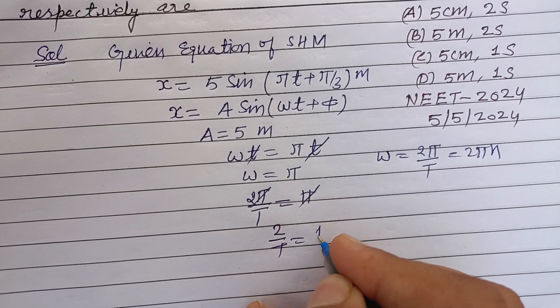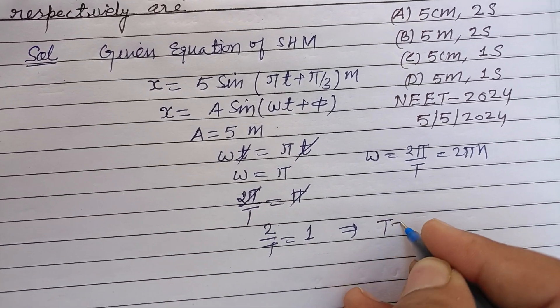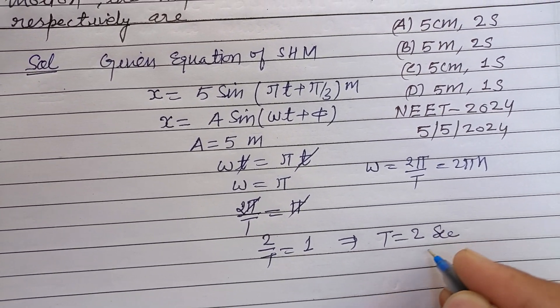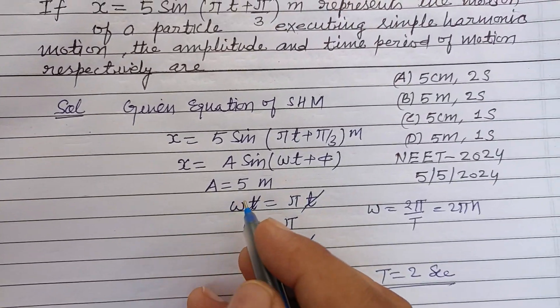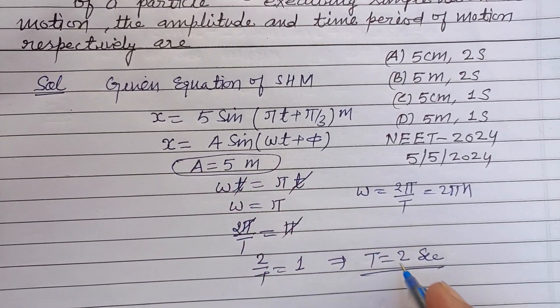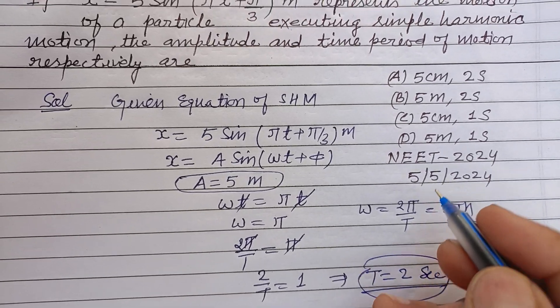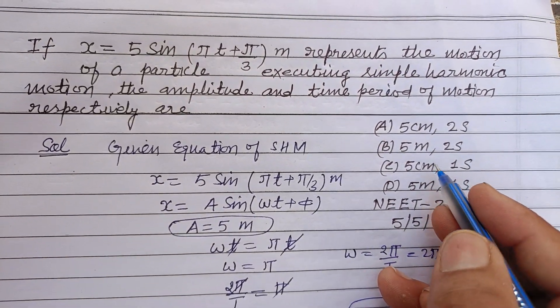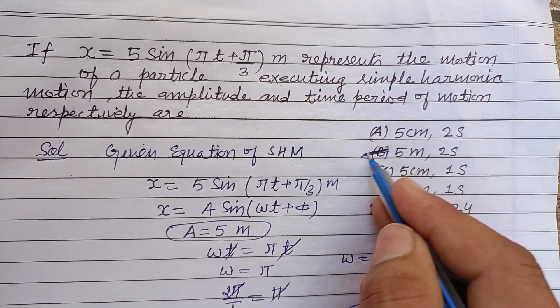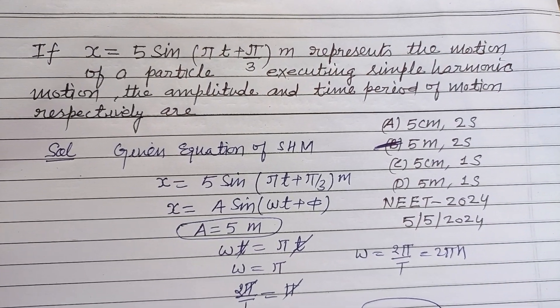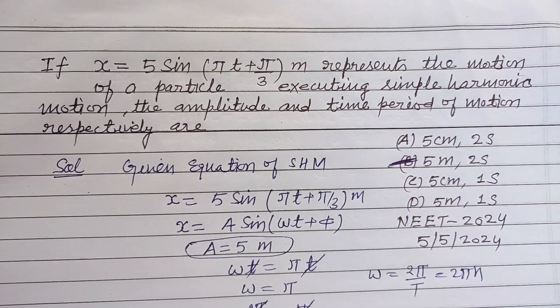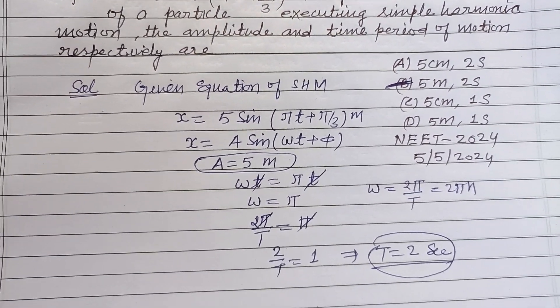2 upon T equals 1. It means T equals 2 seconds. So amplitude is 5 meters and time period is 2 seconds. So 5 meters, 2 seconds is the correct answer. Option B is correct. I hope you got it. Please like the video, subscribe the channel, thanks for watching.